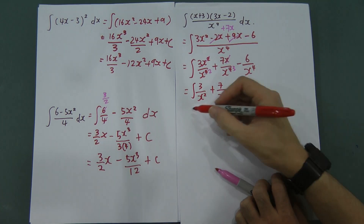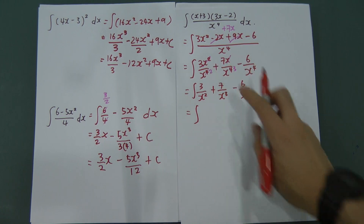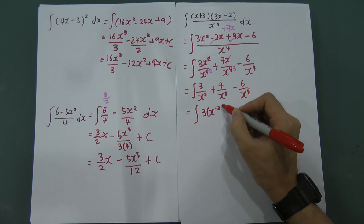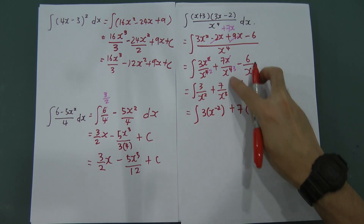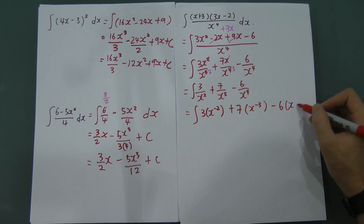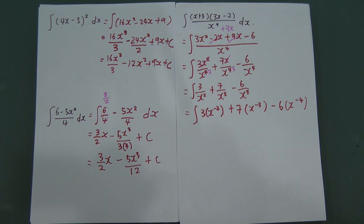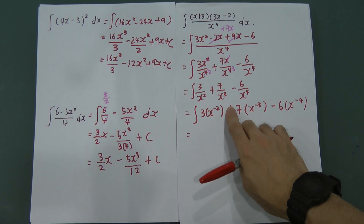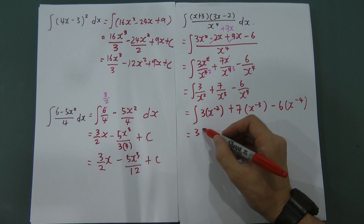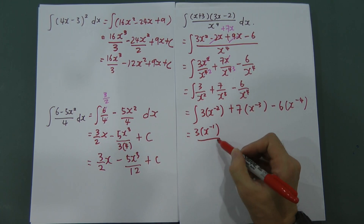Using indices, move x² to the top to get x to the power of negative 2. So we have 3x⁻² plus 7x⁻³ minus 6x⁻⁴. Now integrate: for 3x⁻², add 1 to the power to get negative 1, so divide by negative 1.